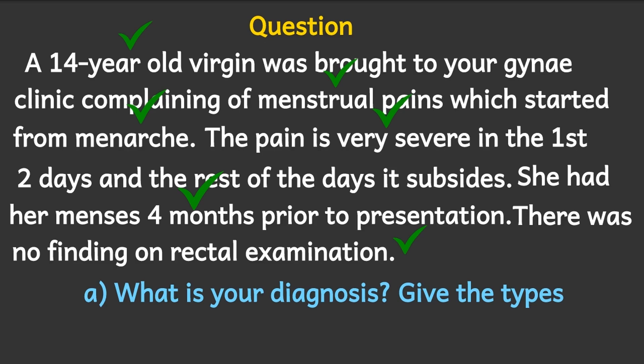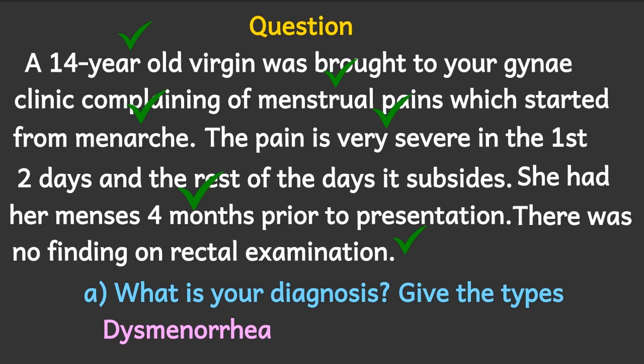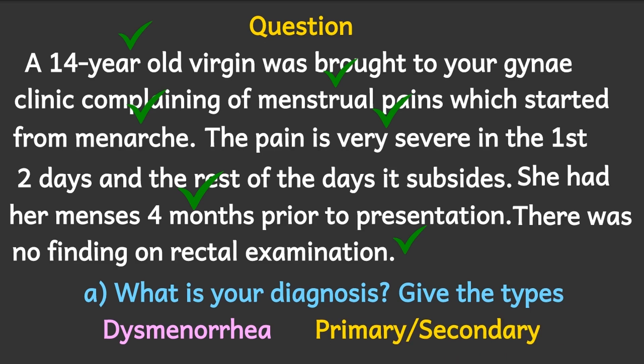For this question, I will explain the relevance of the key information on the next slide. But this 14-year-old who came with menstrual pain obviously has dysmenorrhea — that is the diagnosis. There are two types: primary and secondary. Actually, dysmenorrhea on its own is a symptom, not a diagnosis. But we kept the diagnosis as dysmenorrhea because the question asked us to give the types. This lady actually has primary dysmenorrhea, which is a diagnosis. But it is okay to state the diagnosis as dysmenorrhea, with the types being primary and secondary.